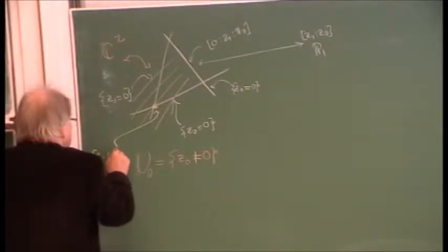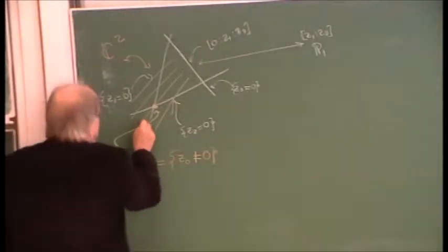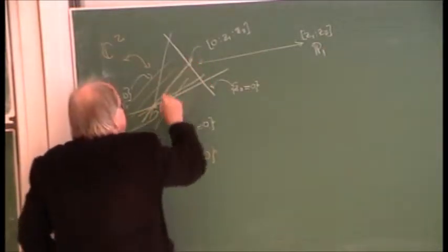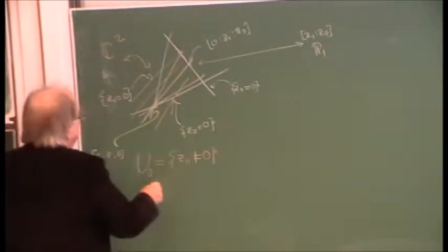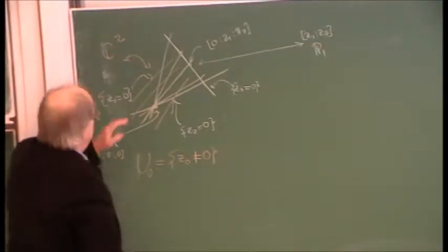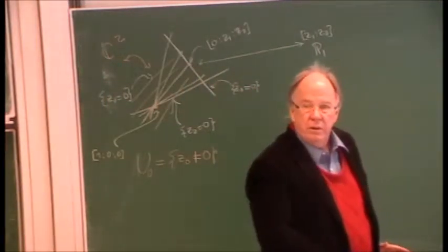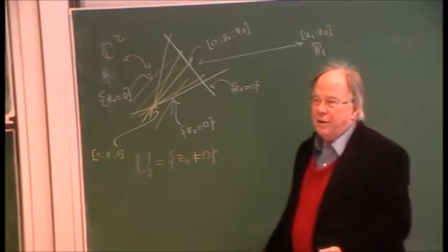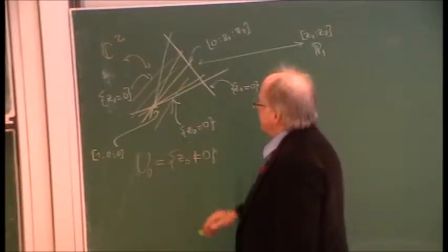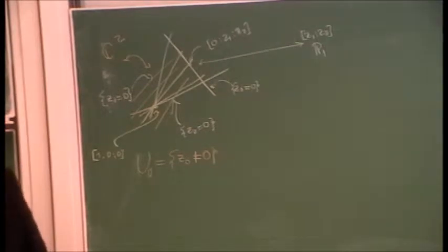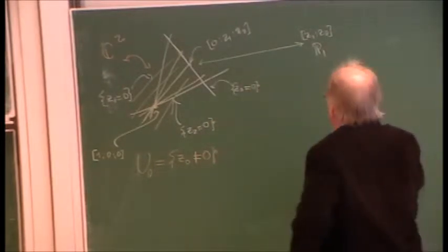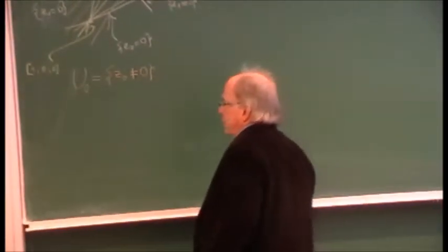I think of (1:0:0) as the origin in C². Now I'm looking at lines through the origin — all these lines through the origin. I compactify each one of them at infinity, adding one point, to obtain a family of P1s going through the origin. This is C² compactified by the line at infinity. There is no canonical line at infinity. This is the standard picture of P2 with the coordinate lines.